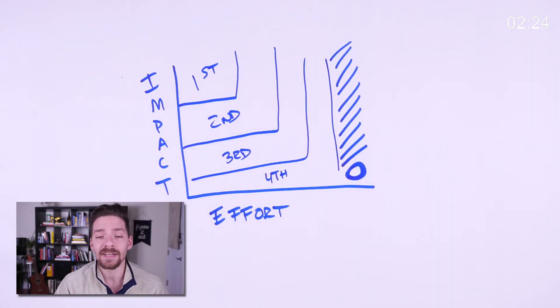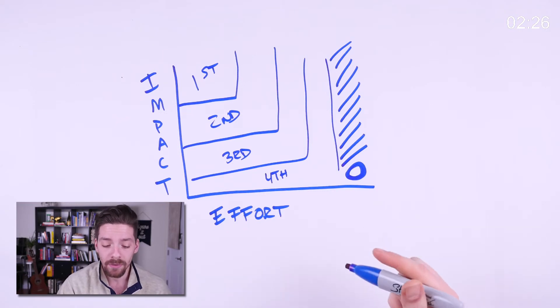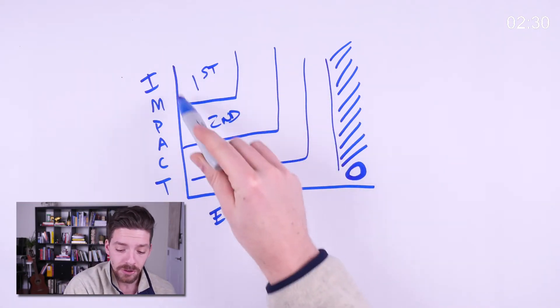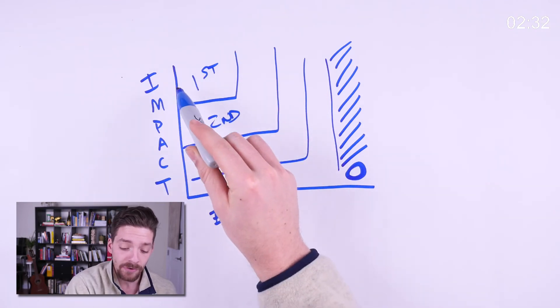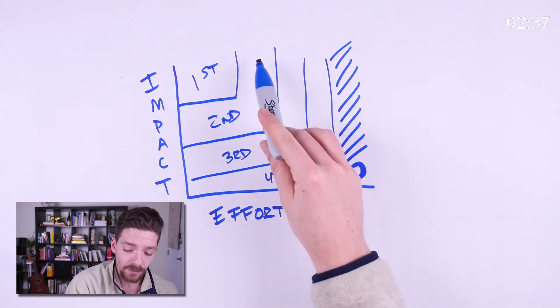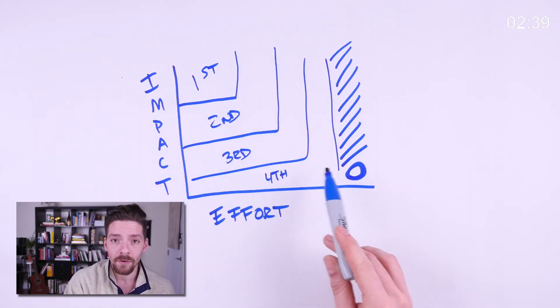And you get this natural prioritization schema, where things that are very impactful but don't take a lot of effort, those should be done first. If there are things that are somewhat impactful but might take some effort, those should be done second. And then so on and so forth.